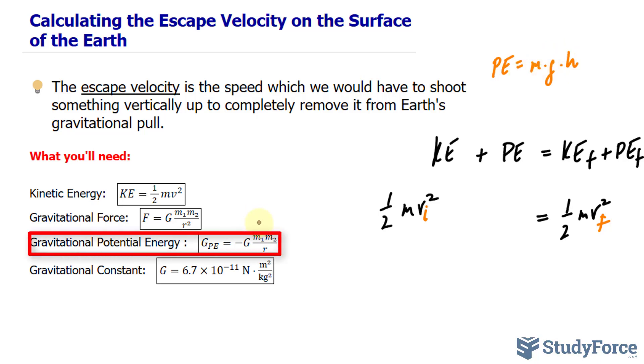So instead of using this formula, we use the formula shown right here instead. And this formula takes into account the change in potential energy that arises as a result of the acceleration due to gravity getting weaker in large scale cases such as what we have here.